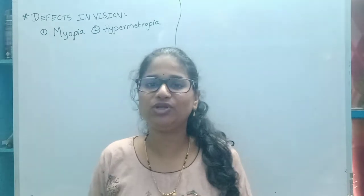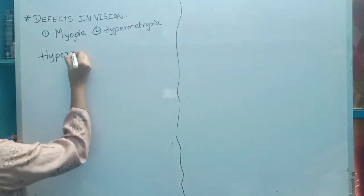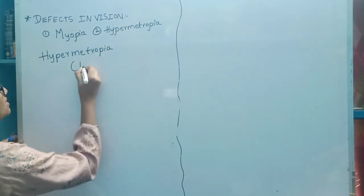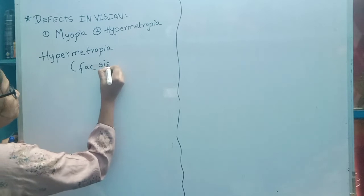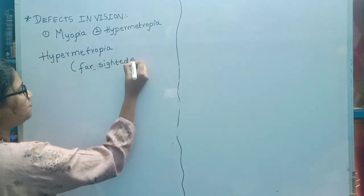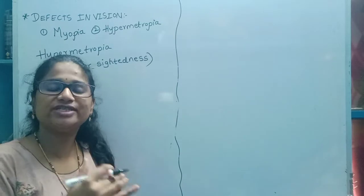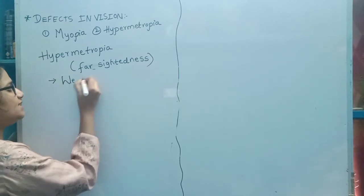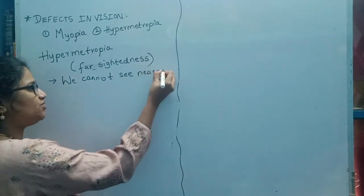Today we are going to discuss one more defect, that is hypermetropia. This hypermetropia is also called as long-sightedness or far-sightedness. It is exactly opposite to myopia. In myopia, we are not able to see far objects clearly. In hypermetropia, we cannot see nearer objects clearly.